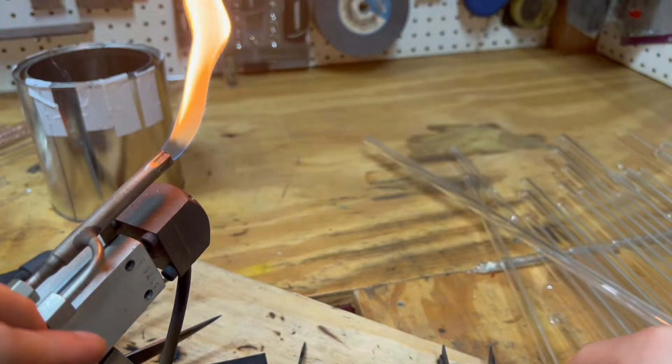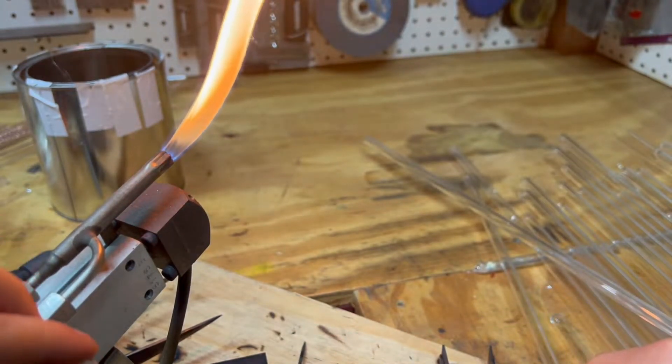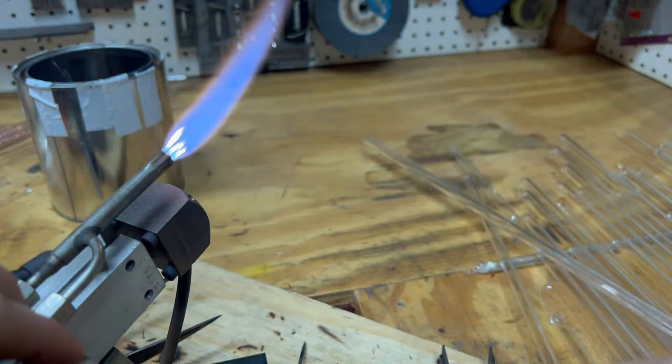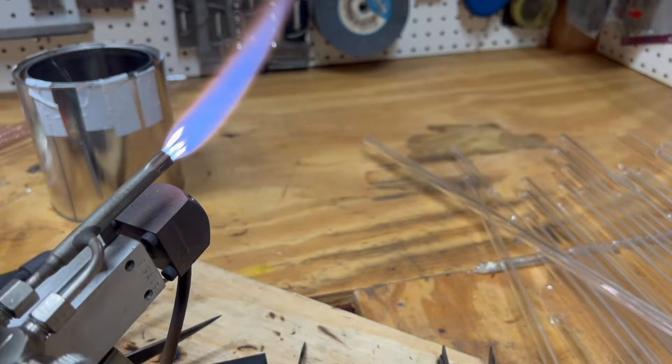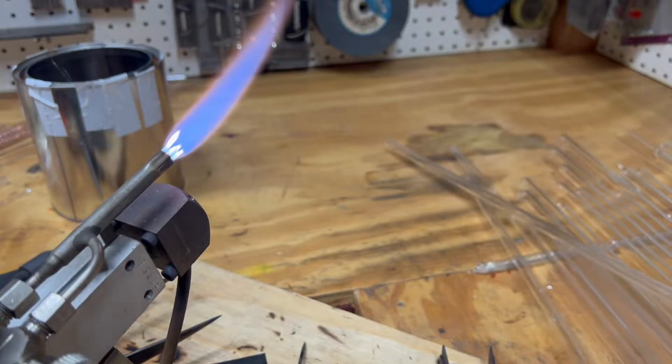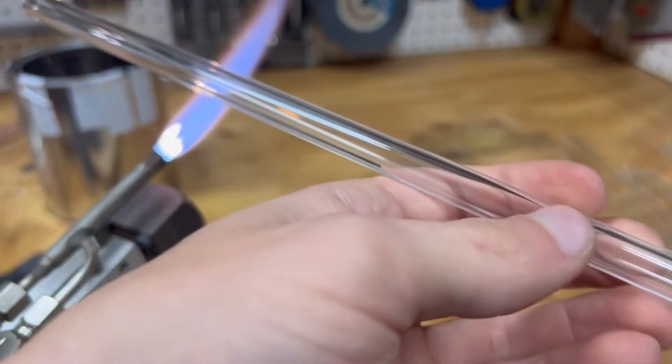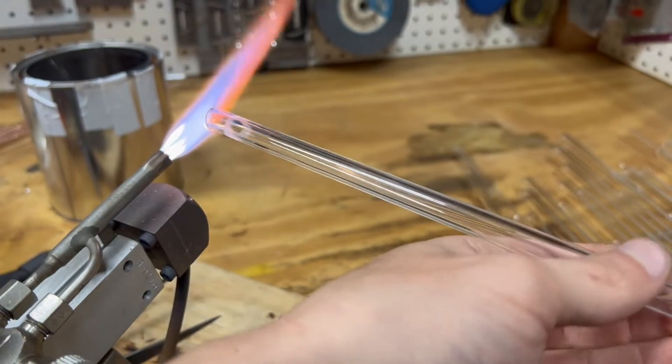Now we're ready to start. First, attach the blow hose assembly. Then start bringing the heat onto the tube. Slowly bring up to the heat while spinning. It is important to not stop spinning because this will cause it to become uneven.